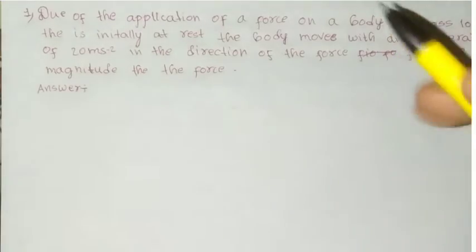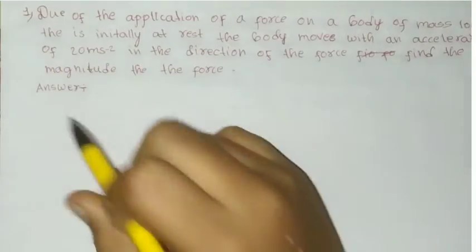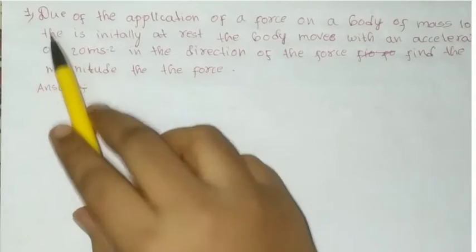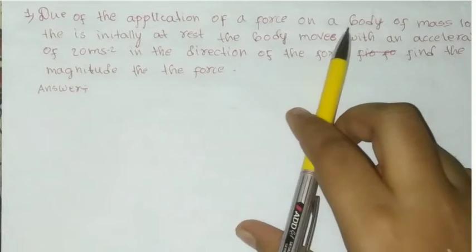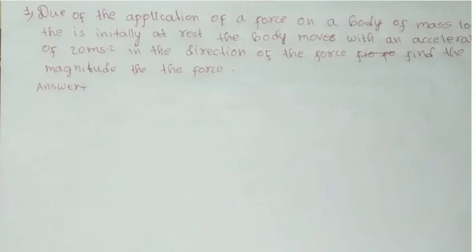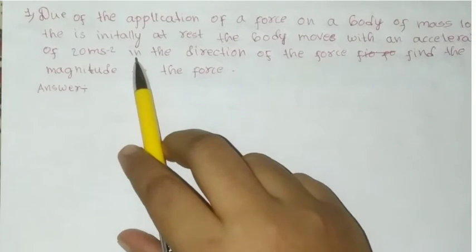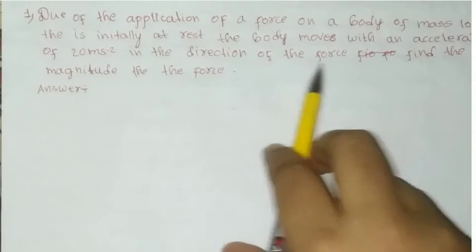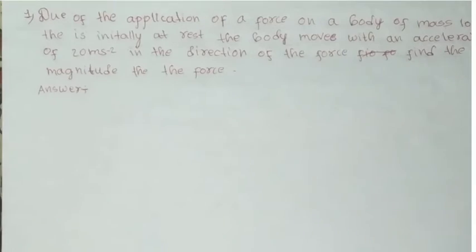Hi guys, my name is Physics Law. Newton's laws of motion, first problem discussed. Due to the application of a force on a body of mass 100 kg that is initially at rest, the body moves with an acceleration of 20 meter per second square in the direction of the force. Find the magnitude of the force.